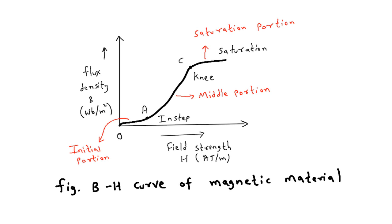When we apply EMF to the coil and the variable resistance is at maximum position, the current flowing through the coil is minimum. As soon as the current increases, the coil gets magnetized.